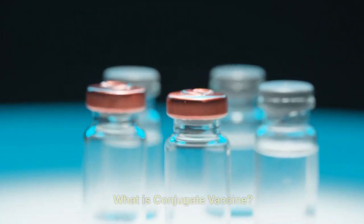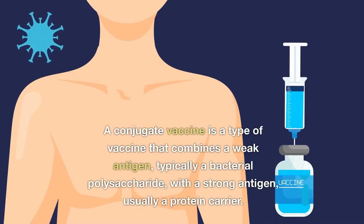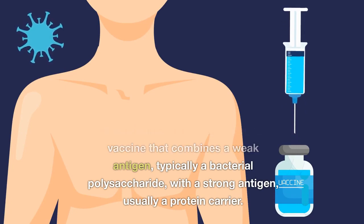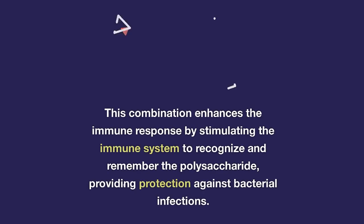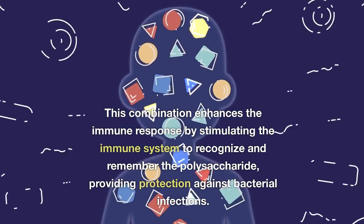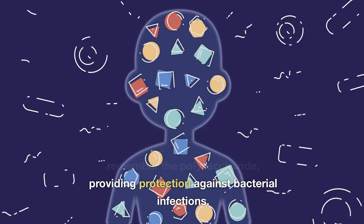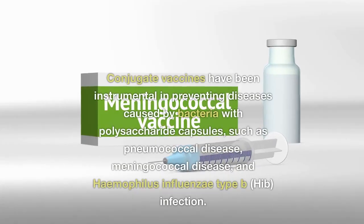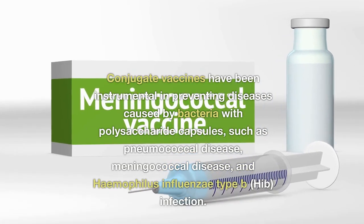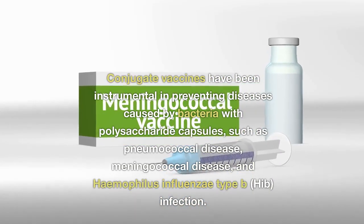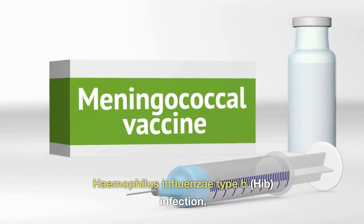What is a conjugate vaccine? A conjugate vaccine is a type of vaccine that combines a weak antigen, typically a bacterial polysaccharide, with a strong antigen, usually a protein carrier. This combination enhances the immune response by stimulating the immune system to recognize and remember the polysaccharide, providing protection against bacterial infections. Conjugate vaccines have been instrumental in preventing diseases caused by bacteria with polysaccharide capsules, such as pneumococcal disease, meningococcal disease, and Haemophilus influenzae type B infection.